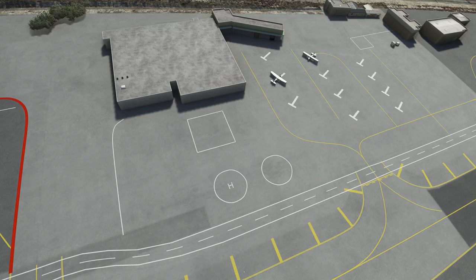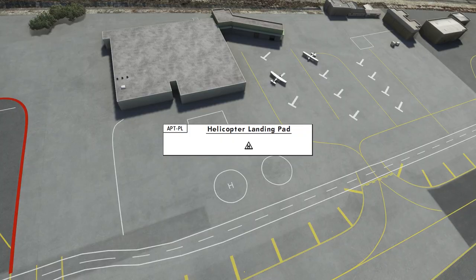What about helicopters? Orlando doesn't have any actual helicopter landing areas, but a helipad is depicted by a triangle with an H in it.